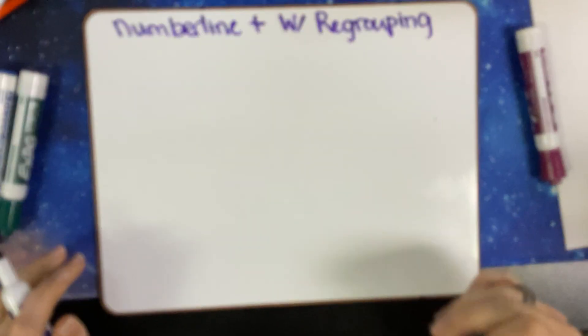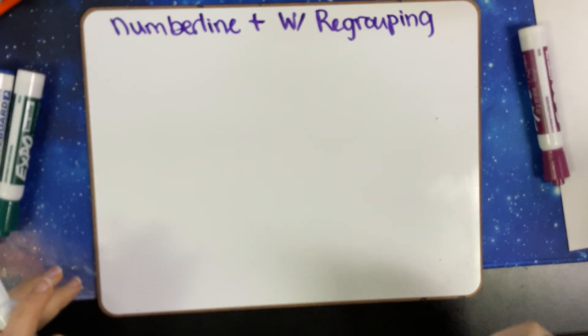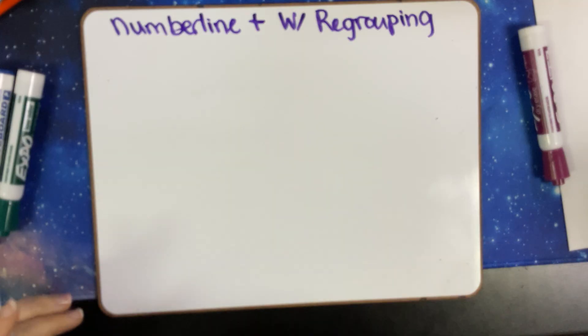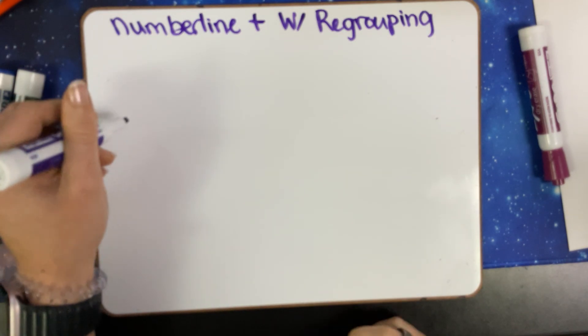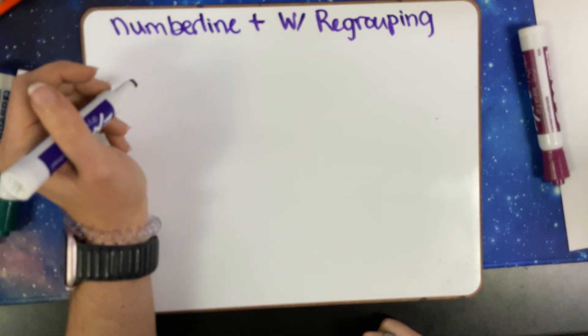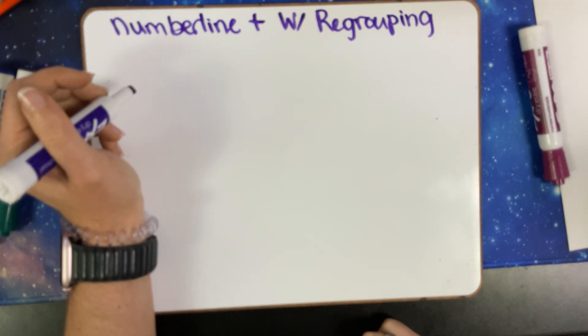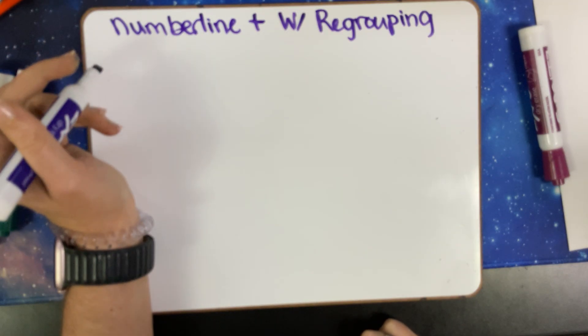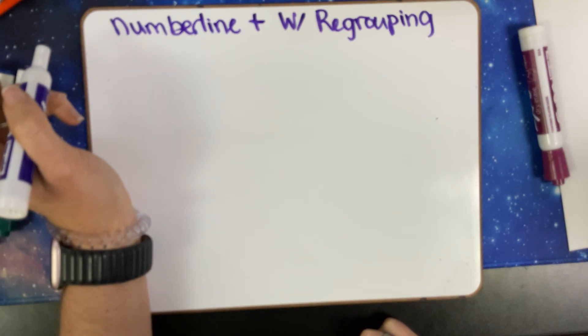We have number line addition with regrouping. The number line is the easiest place to regroup because I'm not worried about where or what I'm going over. As long as I have two numbers, I'm able to easily hop forward or backwards and take it in as small of chunks as possible. This tends to be the best strategy for kids who might be forgetting to move things into new place values when they're adding or subtracting.